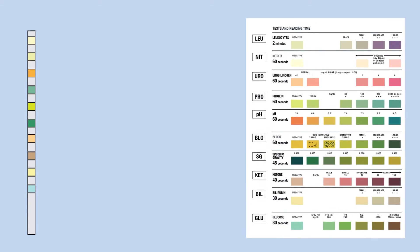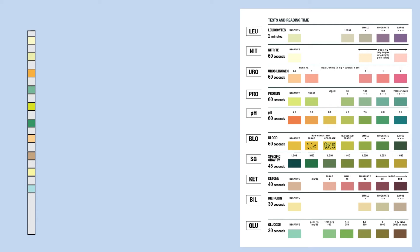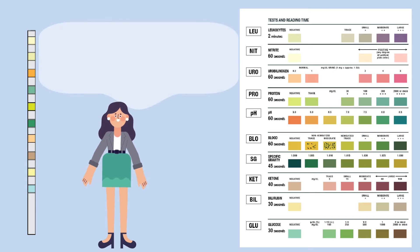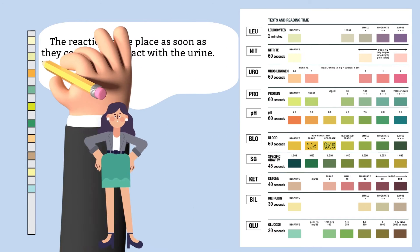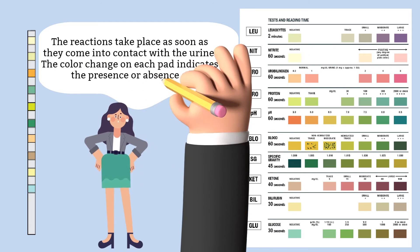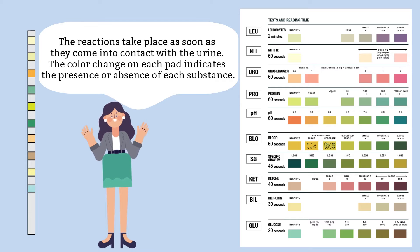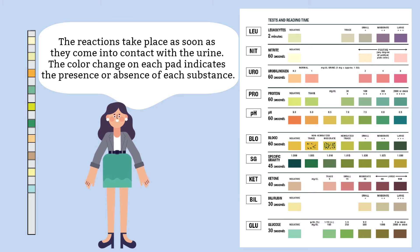This is what the individual strip looks like, and the color chart on the bottle is what we use to compare the color changes to. After we dip the testing strip into the sample, the chemical reaction starts and the indicator of each pad will change to indicate the presence, absence, and semi-quantitative result on each of these 10 tests. Another thing to keep in mind is that once the strip comes into contact with urine, the reaction starts and each reaction has to be read at a certain time. If you read the reactions too early or too late, the result will not be accurate.